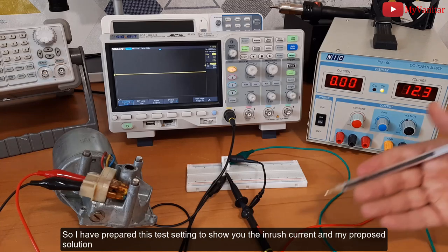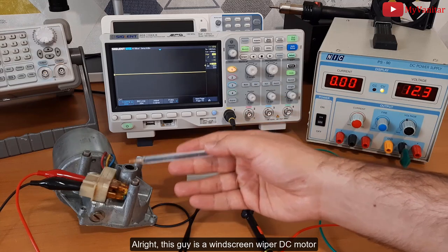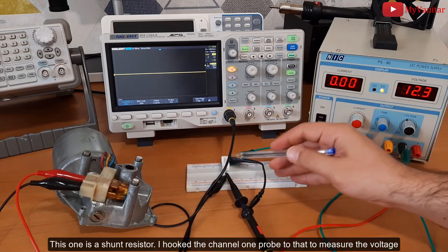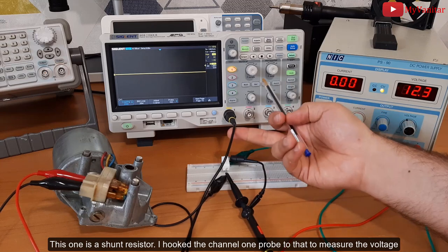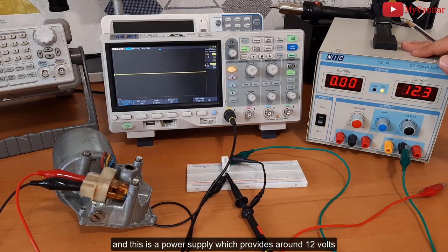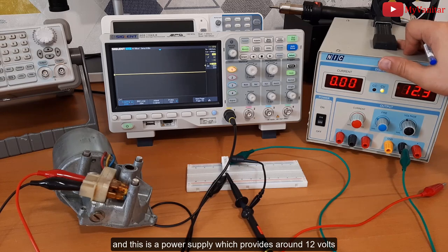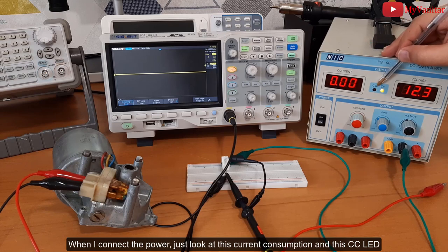the inrush current and my proposed solution. All right, this guy is a windscreen wiper DC motor. This one is a shunt resistor - I hooked the channel one probe to that to measure the voltage. And this is a power supply which provides around 12 volts. When I connect the power, just look at this current consumption and this CC